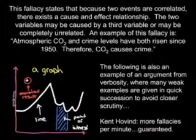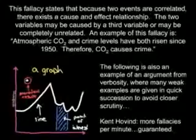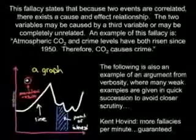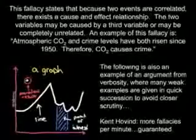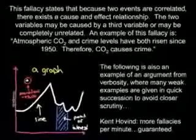Correlation implies causation. This fallacy states that because two events are correlated, there exists a cause and effect relationship. The two variables may be caused by a third variable, or may be completely unrelated. An example of this fallacy is: atmospheric carbon dioxide and crime levels have both risen since 1950. Therefore, carbon dioxide causes crime.